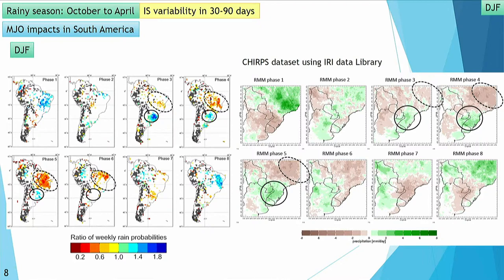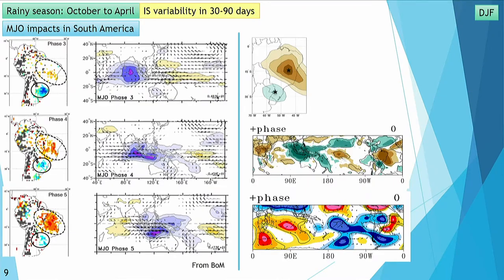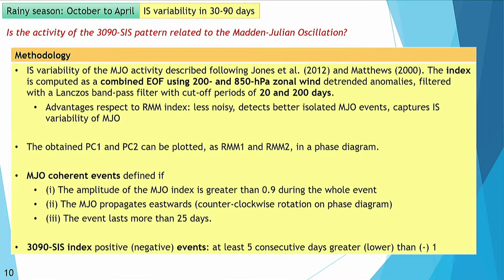There seems to be a relationship: if you look at the location of the convective centers between phases three to five, you can see them around the Indian Ocean moving towards the Maritime Continent, which would be related to a positive phase of the SIS pattern. On day zero, the convection is located in the same region as these phases. The wavelength present on that day doesn't necessarily mean it was generated by that location of the negative anomaly — it takes time to build up and then to impact South America. To test that from another point of view we used an MJO index computed following Jones 2012.